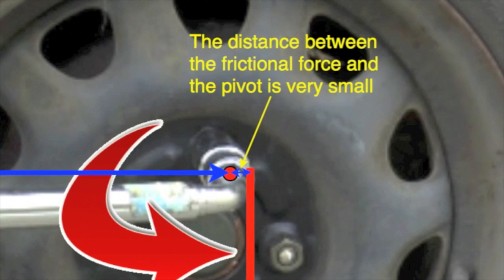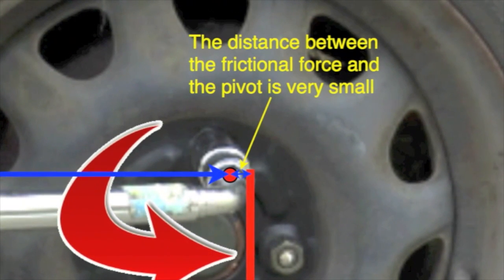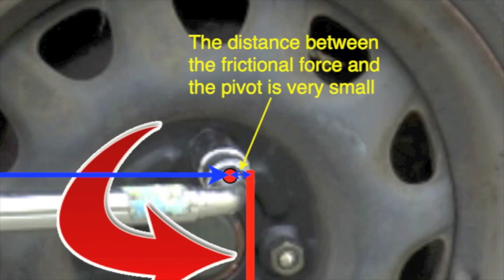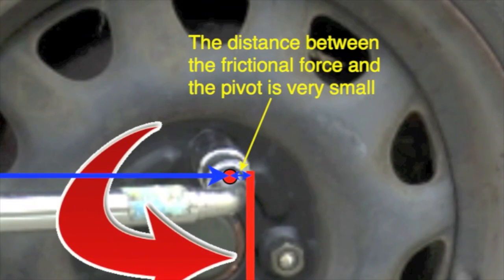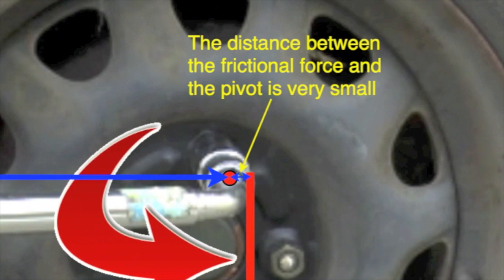The bolt is relatively easy to turn because the spanner is a long one and the force applied is a long way from the turning point at the centre of the bolt, whereas the frictional force is only a tiny distance from the centre of the bolt.